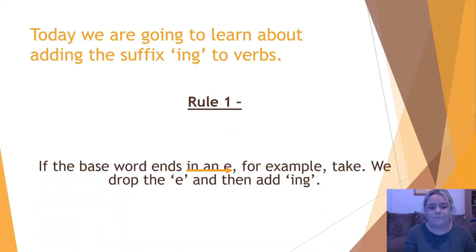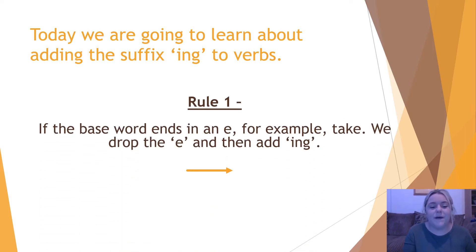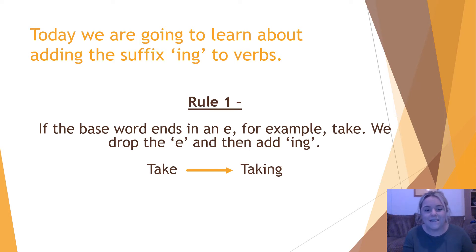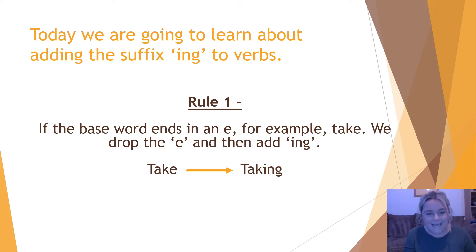Rule 1: if the base word ends in an e — for example, 'take' — we drop the e and then add -ing. Here we can see the word 'take' has an e at the end. We drop the e and add -ing, so the word becomes 'taking.' I am taking you on holiday. Taking.